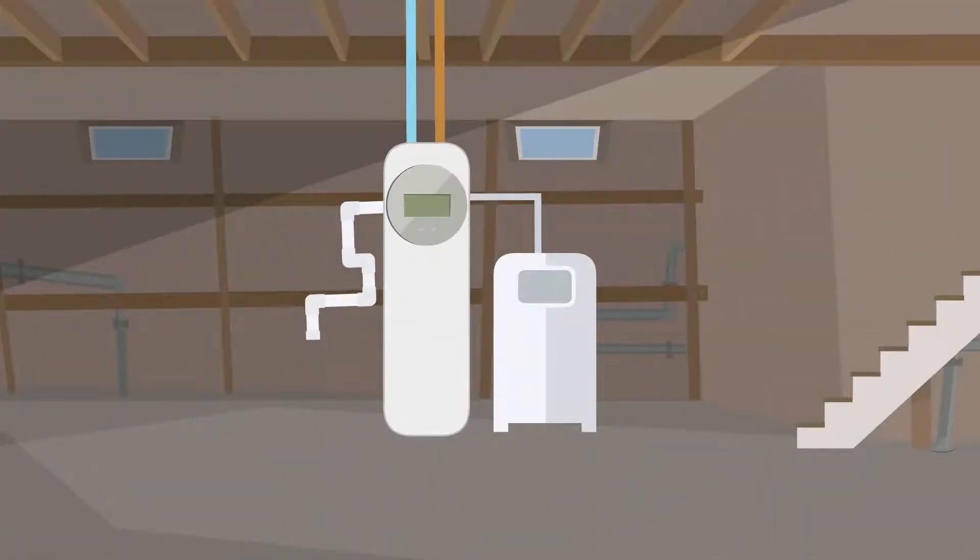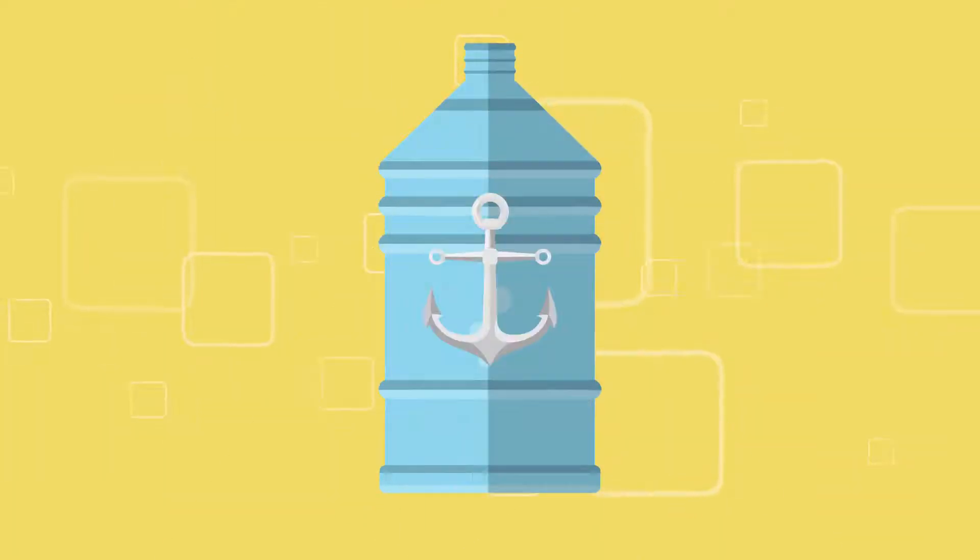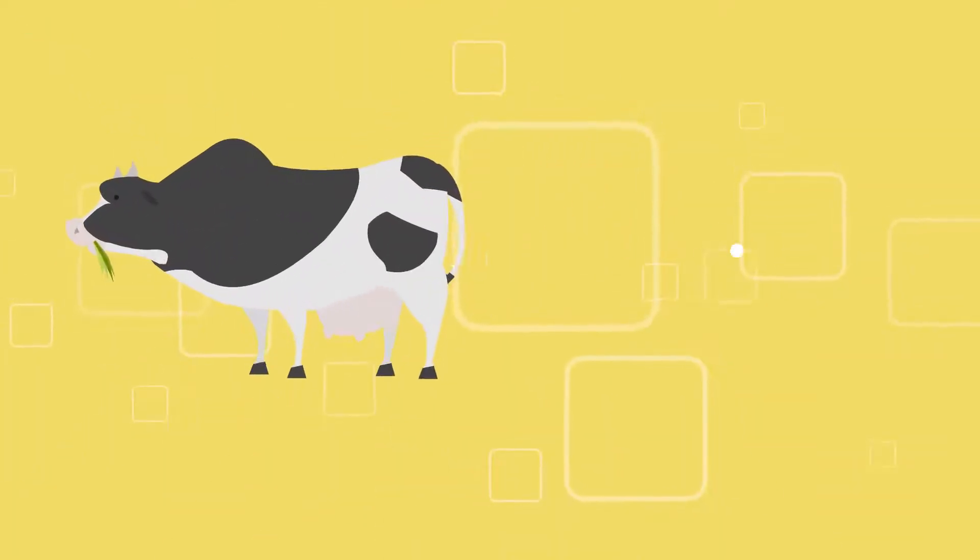How does a water softener work? First, let's define hard water. Hard water is caused by heavy minerals such as calcium and magnesium.